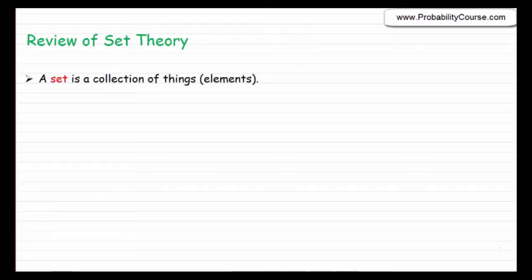If you already know all of this material, you might skip this video and go directly to the next one. Okay, what is a set? A set is a collection of things or elements. For example, I might decide to define a set A that consists of two elements: a happy face and a sad face.